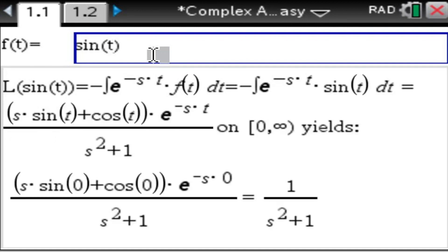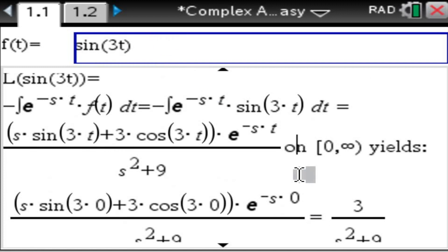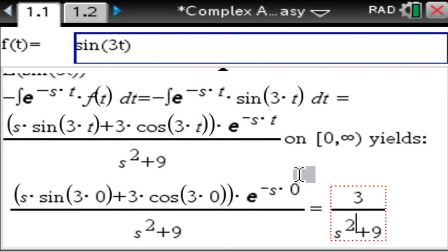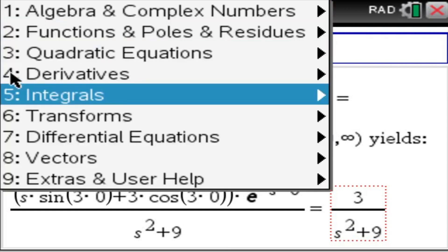So let's say we want to find the Laplace transform of sine of t, and plugging in sine of t into the Laplace integral and solving it gives us 1 over s squared plus 1. And again, if I change it here slightly, my answer would immediately change as well. 3 over s squared plus 9. Similarly, for the Fourier transforms.